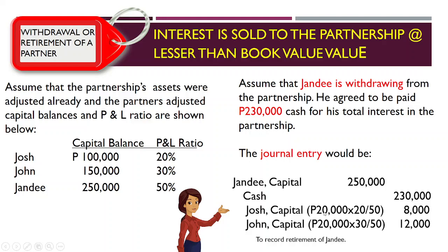Using the same problem, Jandy agreed to be paid $230,000 cash for his total interest. Jandy's capital balance is $250,000, but he will be receiving $230,000, which is less than the book value. The entry: debit Jandy capital $250,000, credit cash $230,000, and the difference of $20,000 is allocated among the remaining partners based on their profit and loss ratio.